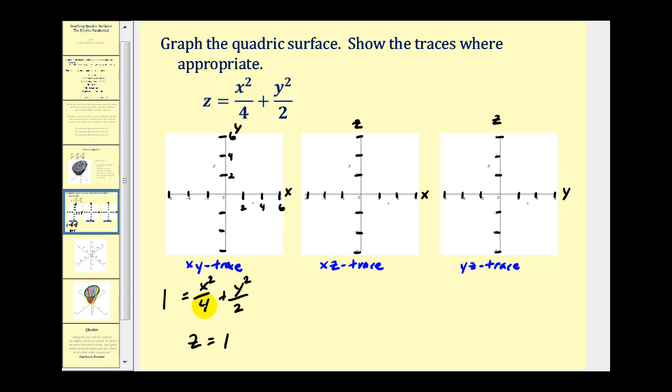So we'd have a squared equals four. So a is equal to two. So we'll plot a point two units to the right of the origin and two units to the left of the origin. Notice this is scaled by twos. Now here we have b squared equals two. So b would be the square root of two, which is about 1.4. So we'll plot a point somewhere in here above the origin and one below the origin.